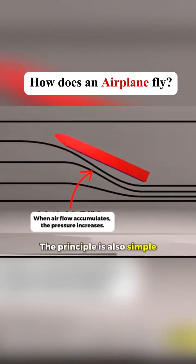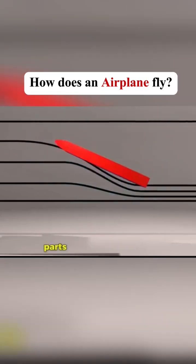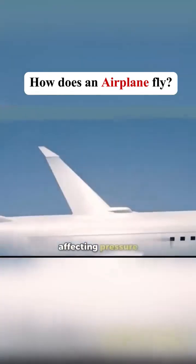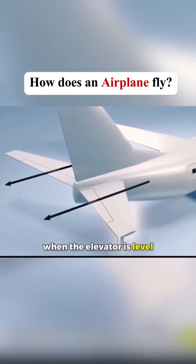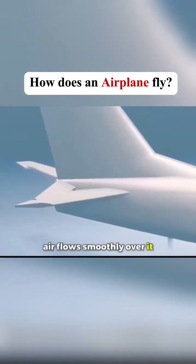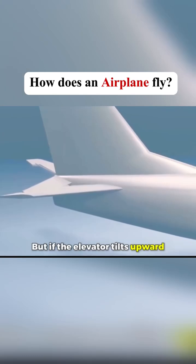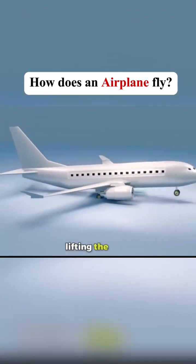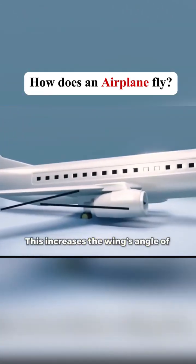The principle is also simple. Adjusting the angle of these parts changes the airflow, affecting pressure. For instance, when the elevator is level, air flows smoothly over it. But if the elevator tilts upward, the tail gets pushed down, lifting the nose. This increases the wing's angle of attack.